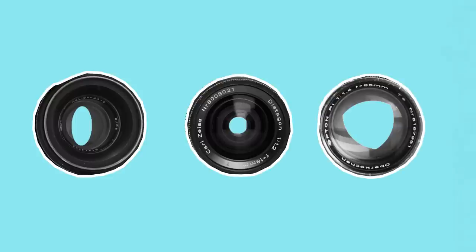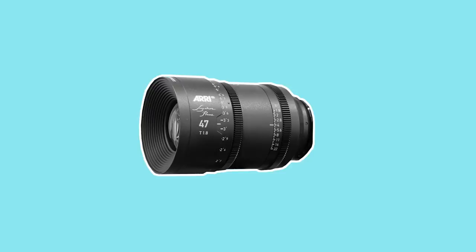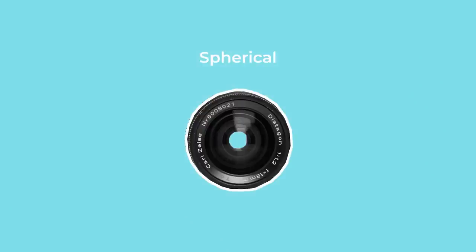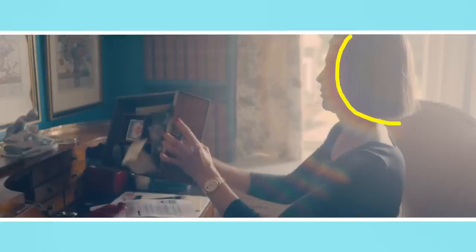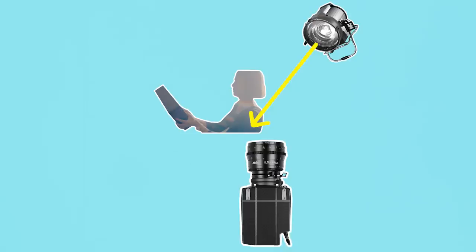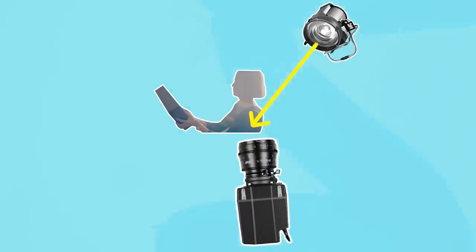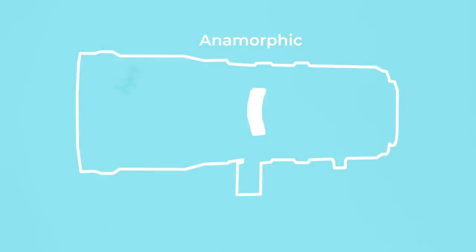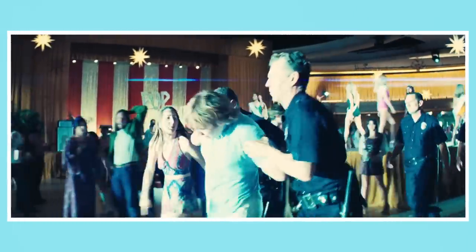Different kinds of lenses produce different kinds of flares, which are determined by the shape of their glass elements, the number of blades that make up the aperture at the back of the lens, and the way in which the glass is coated. Standard spherical lenses have curved circular elements that produce round flares that expand or contract as the light source changes its angle. Anamorphic lenses are made up of regular spherical glass with an added section of concave glass that vertically squeezes the image, which is then de-squeezed to get a widescreen aspect ratio.